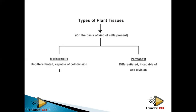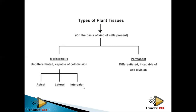For meristematic tissues, we have the apical, which are found at the apex — the tip, top or bottom of the plant. Then you have the lateral, which have the ability to increase the plant's size. And then you have the intercalary, found in mature cells. For this lesson, we are going to focus on apical and lateral meristematic tissues.